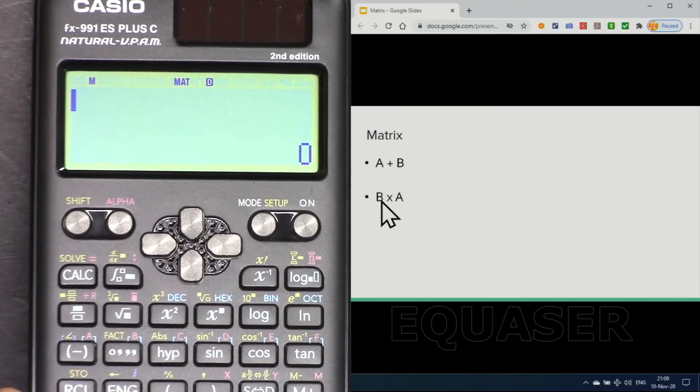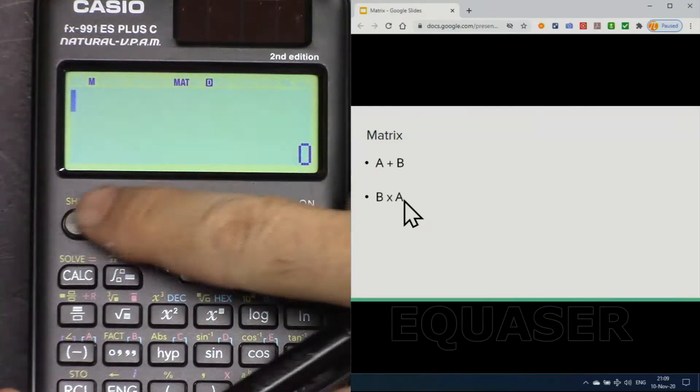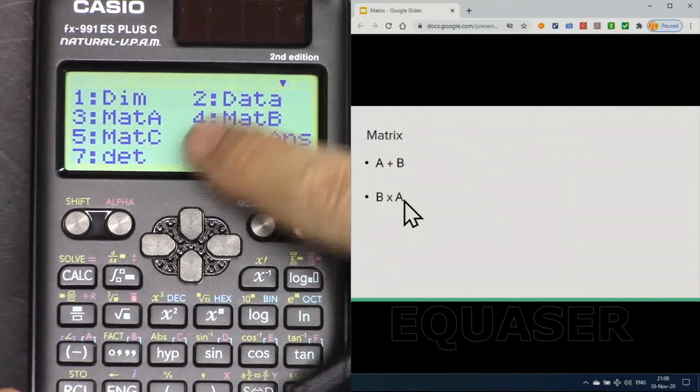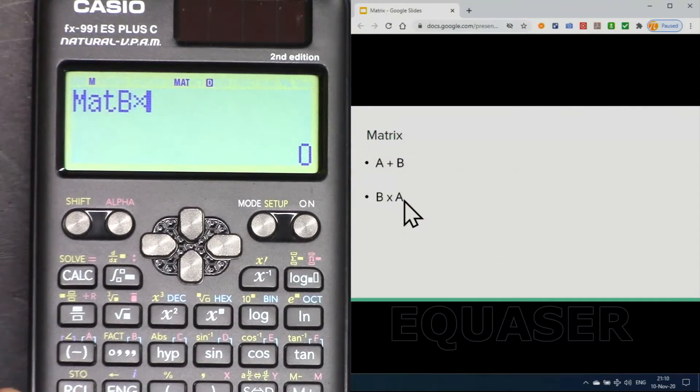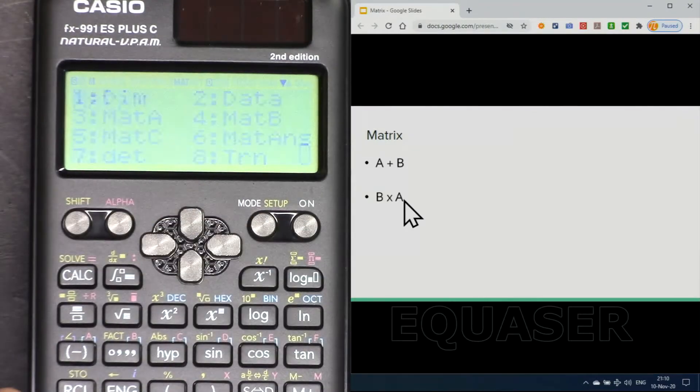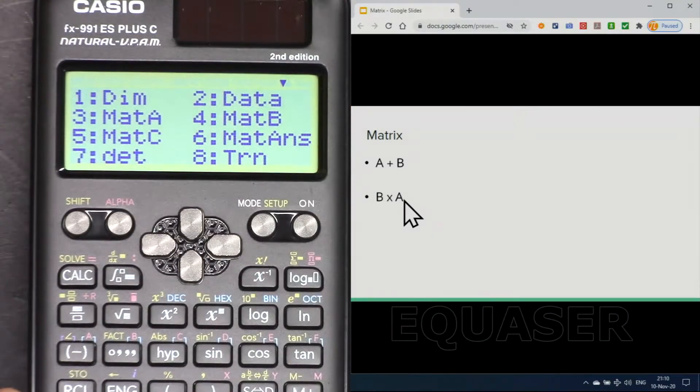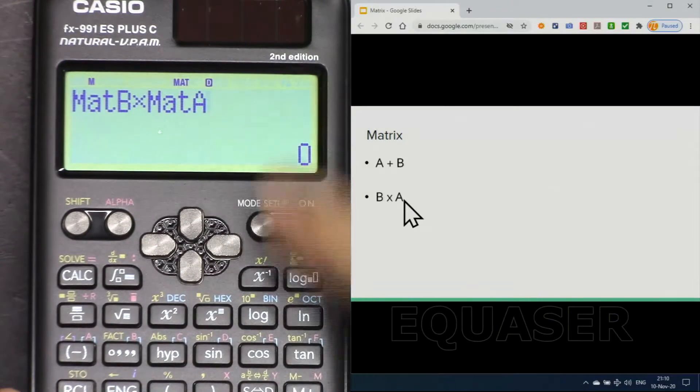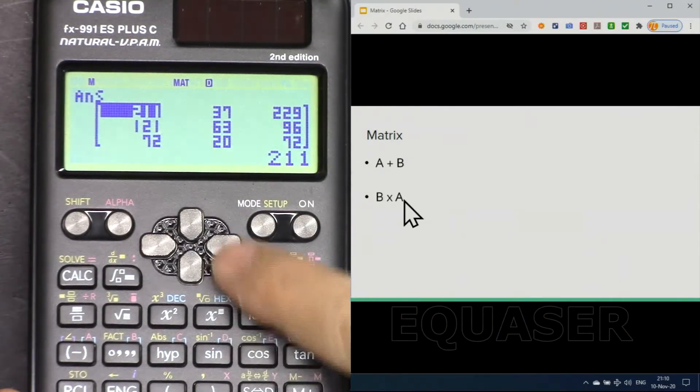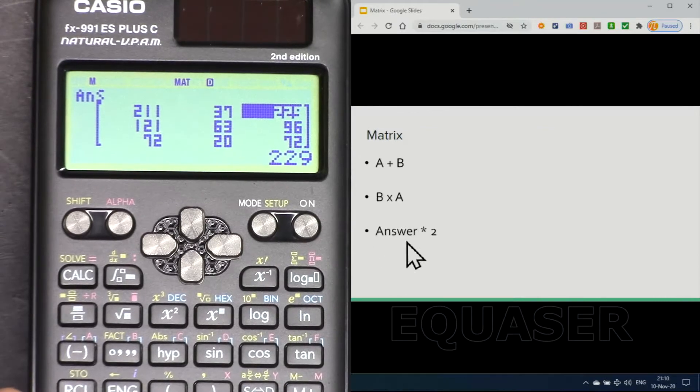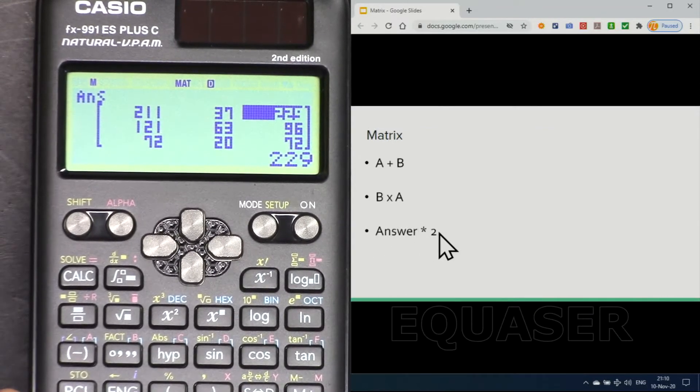And here B times A: shift matrix 4 and then for matrix B, times shift 4 again the matrix and then A3, matrix B times matrix A, and this is the calculated value.